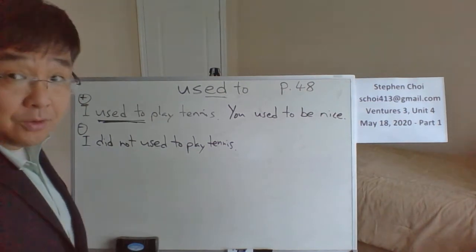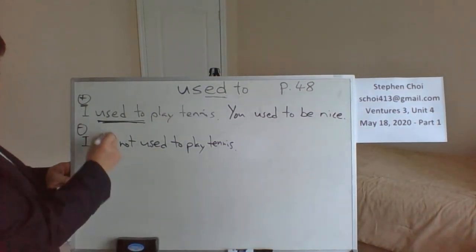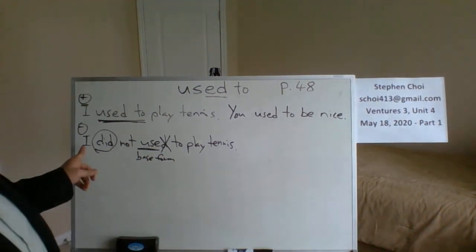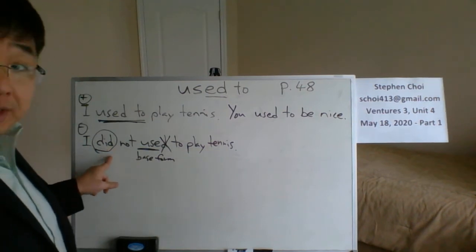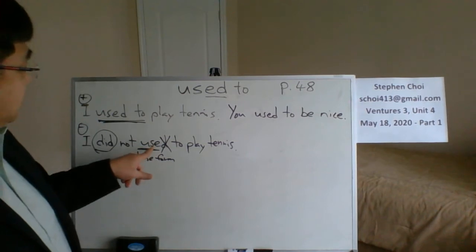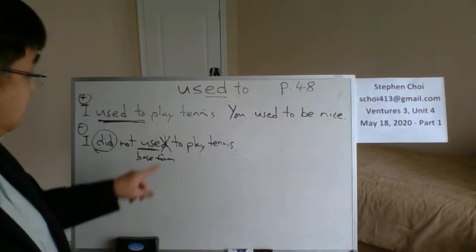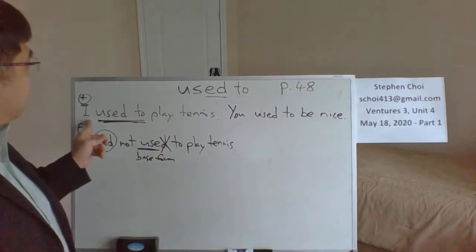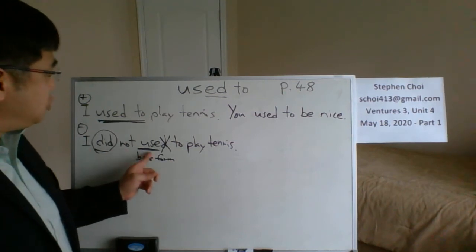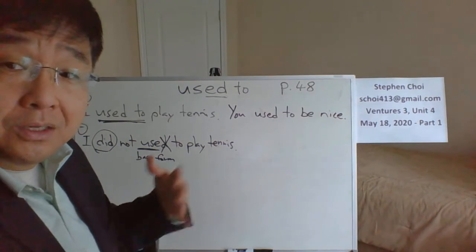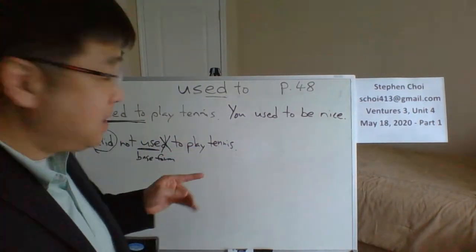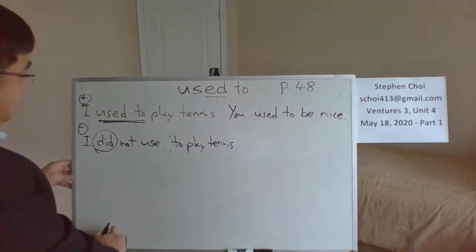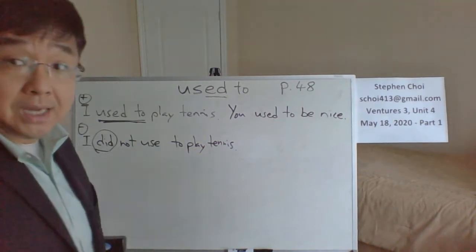When you're speaking quickly, you can't really hear the difference — 'I used to' or 'I did not use to' sound almost the same. But when you write it, make sure you get rid of that D. No D there because of 'did.' So: 'I did not use to play tennis.' And same here: 'You did not use to be nice.'